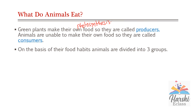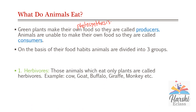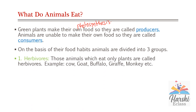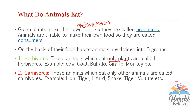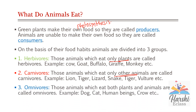On the basis of their food habits, animals are divided into three groups. First, herbivores — animals that eat only plants — for example, cow, goat, buffalo, giraffe, monkey. Buffaloes eat grass, oil cake, hay, and grains. Second, carnivores — animals that eat only other animals. Third, omnivores — animals that eat both plants and animals. Human beings also come under omnivores. Dog, cat, and crow are also examples of omnivores.